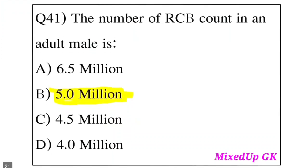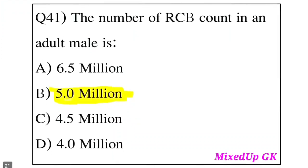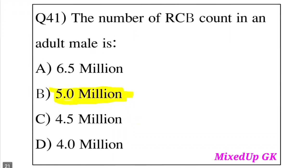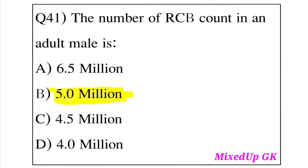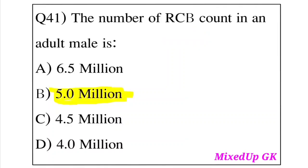Question 41: The number of RBC (Red Blood Corpuscles) count in an adult male is how much? Option A: 6.5 million. Option B: 5 million. Option C: 4.5 million. Option D: 4 million. The answer is Option B, 5 million. The RBC count in an adult male is 5 million.